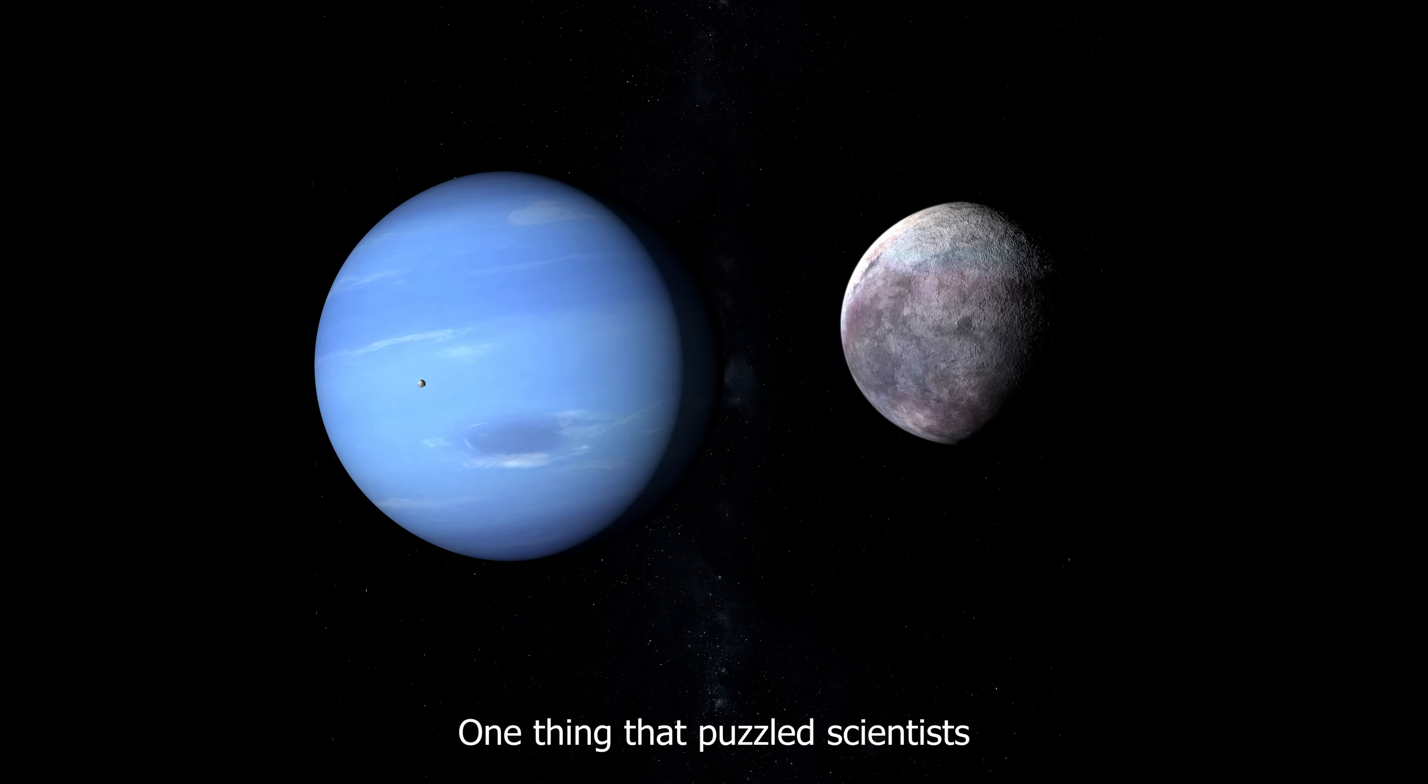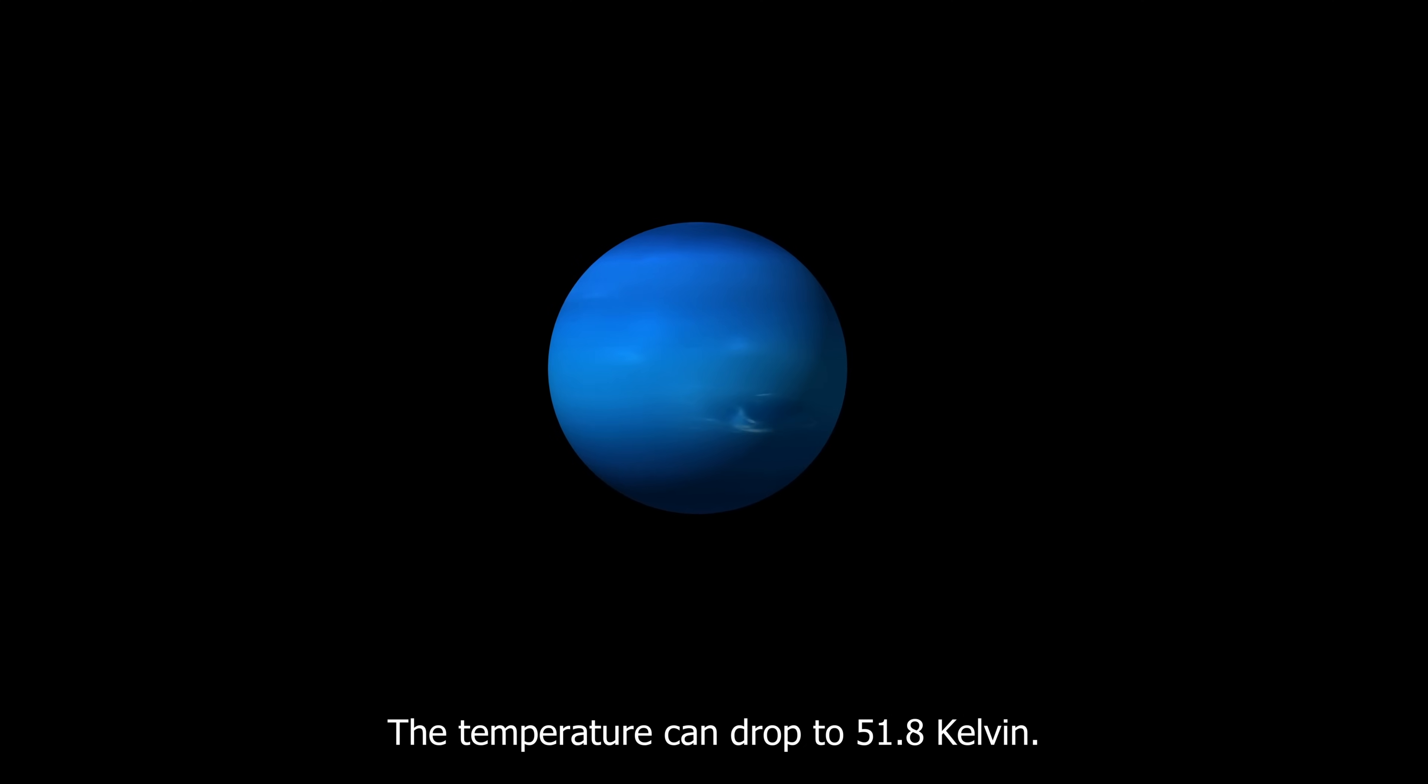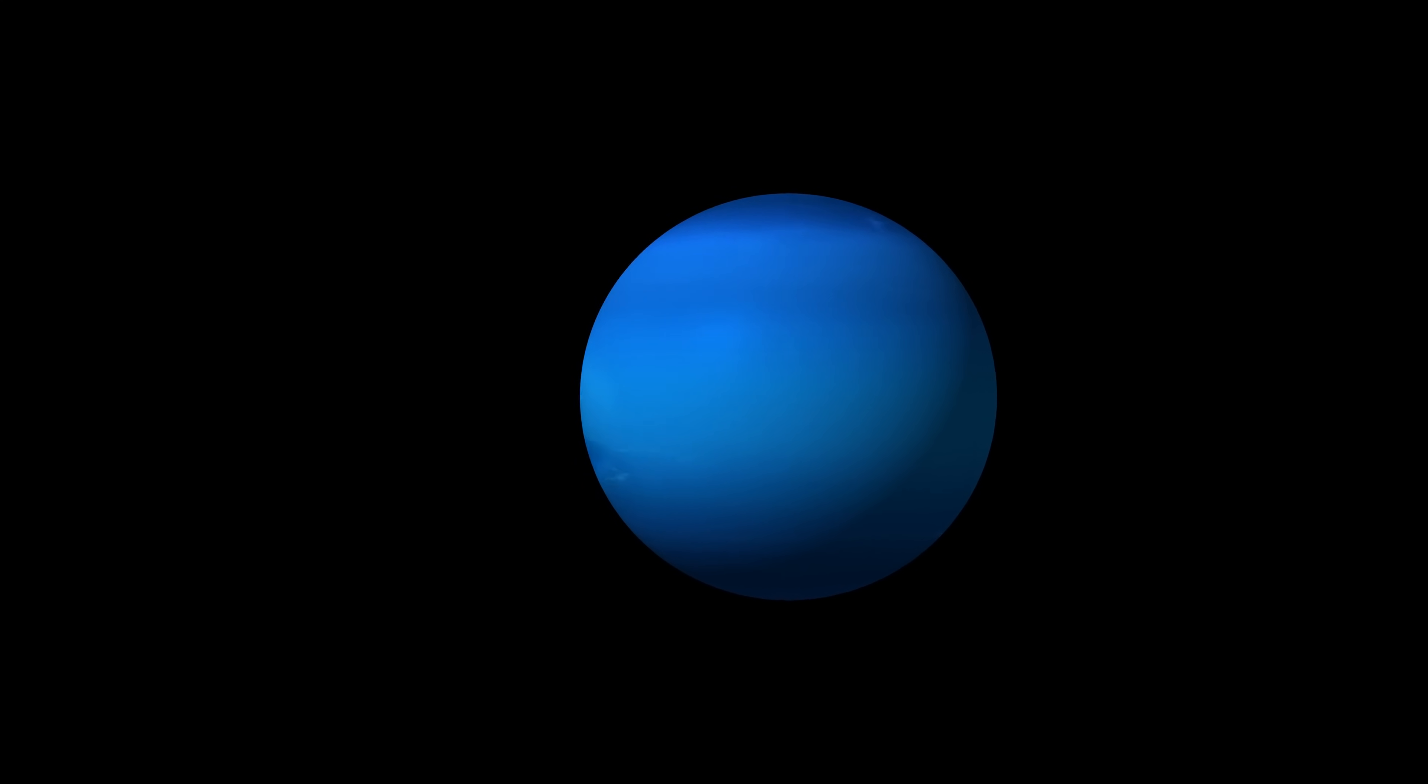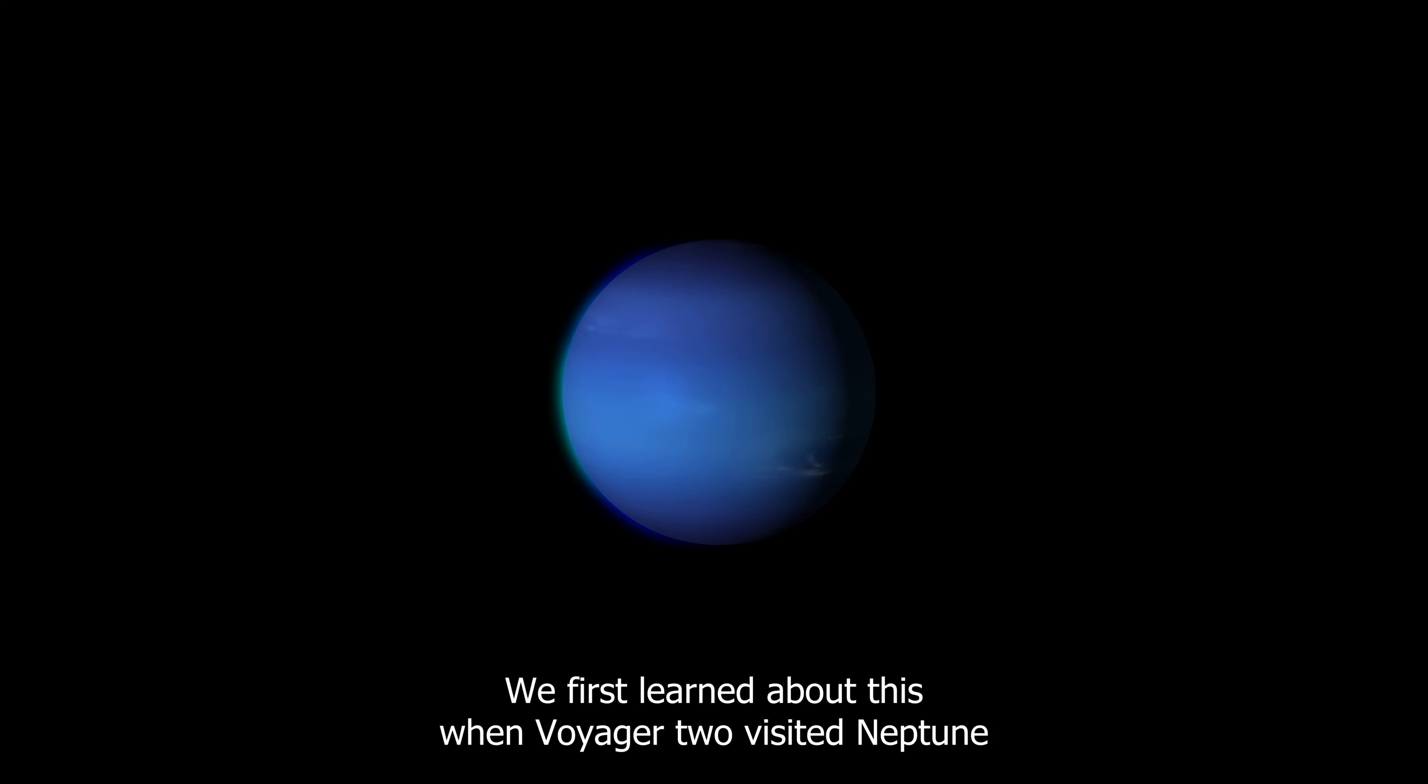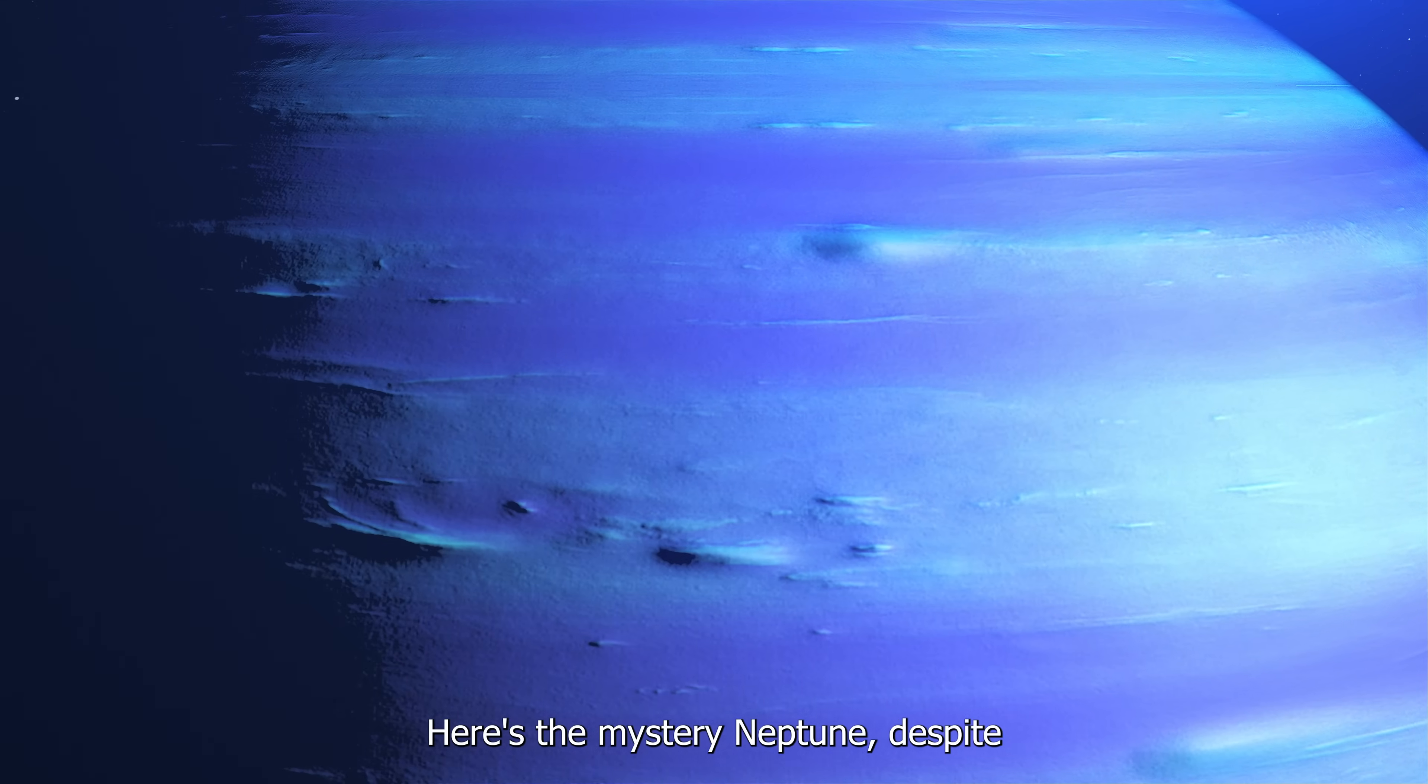One thing that puzzled scientists about Neptune for a long time is how it's warmer than Uranus. In the upper regions of Neptune's air layers, the temperature can drop to 51.8 Kelvin. But if we go deeper, where the air pressure is like what you feel at sea level on Earth, the temperature is 72 Kelvin. As we go even deeper into the layers of gas, the temperature keeps going up. We first learned about this when Voyager 2 visited Neptune many years ago, and it surprised everyone in the science community.